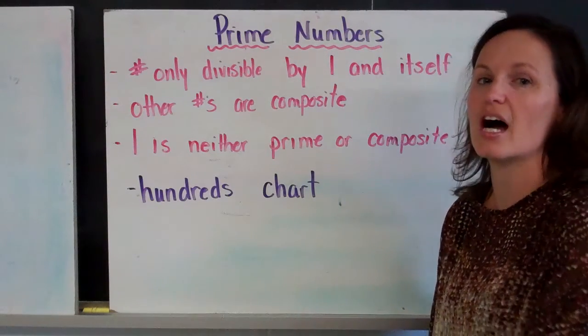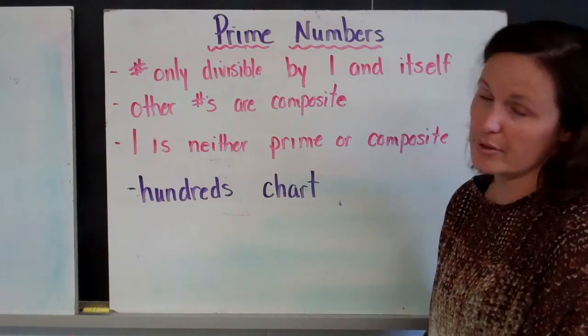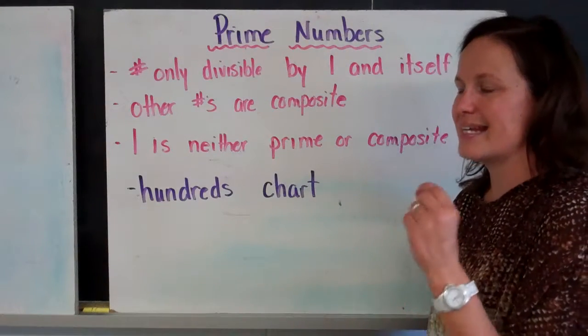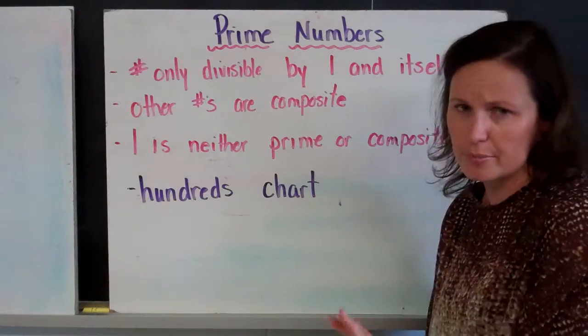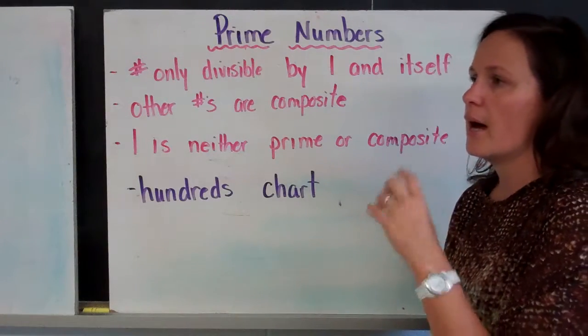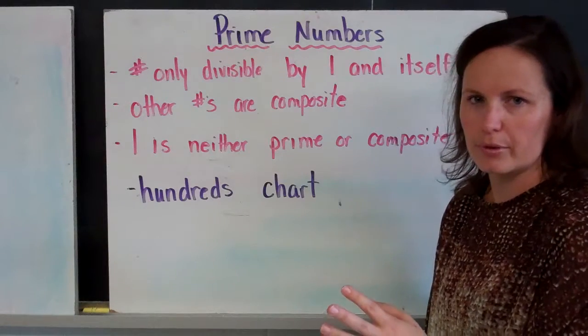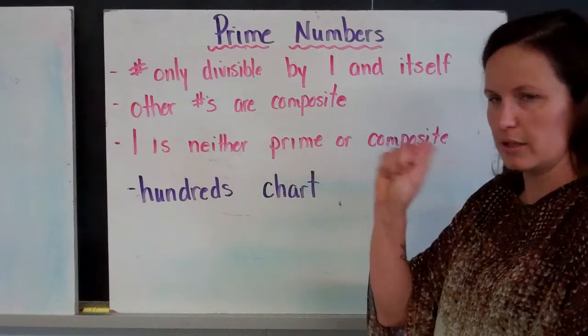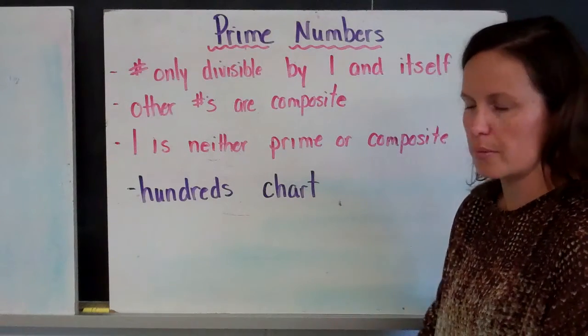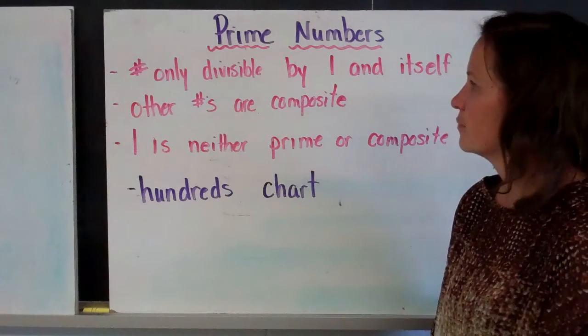Today in class, you were given a hundreds chart. Your assignment for tonight is to go through that hundreds chart and identify all of the prime numbers. So either highlight all the composite numbers and leave the prime numbers blank, or highlight all the prime numbers and leave the composite numbers blank. You must fill in number 1 with black. So fill it in with some black marker or really sharp or really heavy pencil.